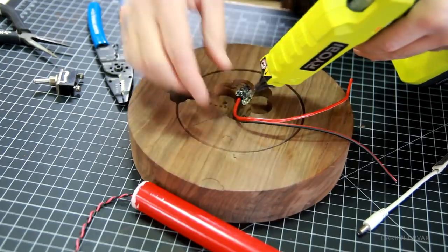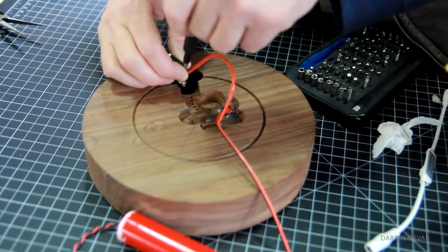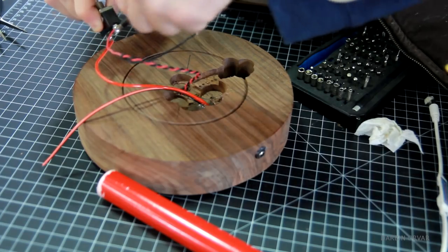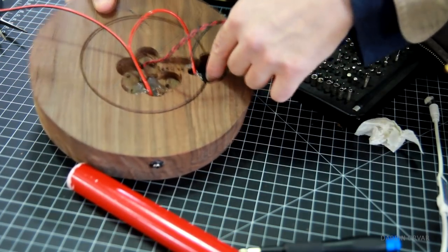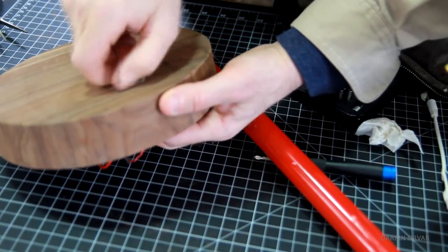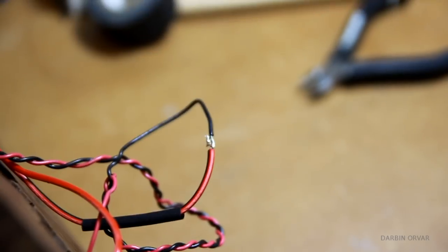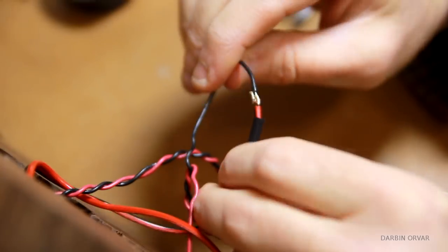Then just connecting everything underneath, so the switch and the wire coming in from the pipe and the barrel plug. Then doing a little bit of soldering to secure it all.